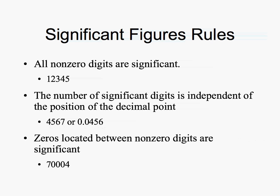Zeros located between non-zero digits are significant — this is very important. So in this instance we have 1, 2, 3 zeros that are in between the 7 and the 4. Those three zeros are significant, meaning this number would have a total of 5 significant figures.